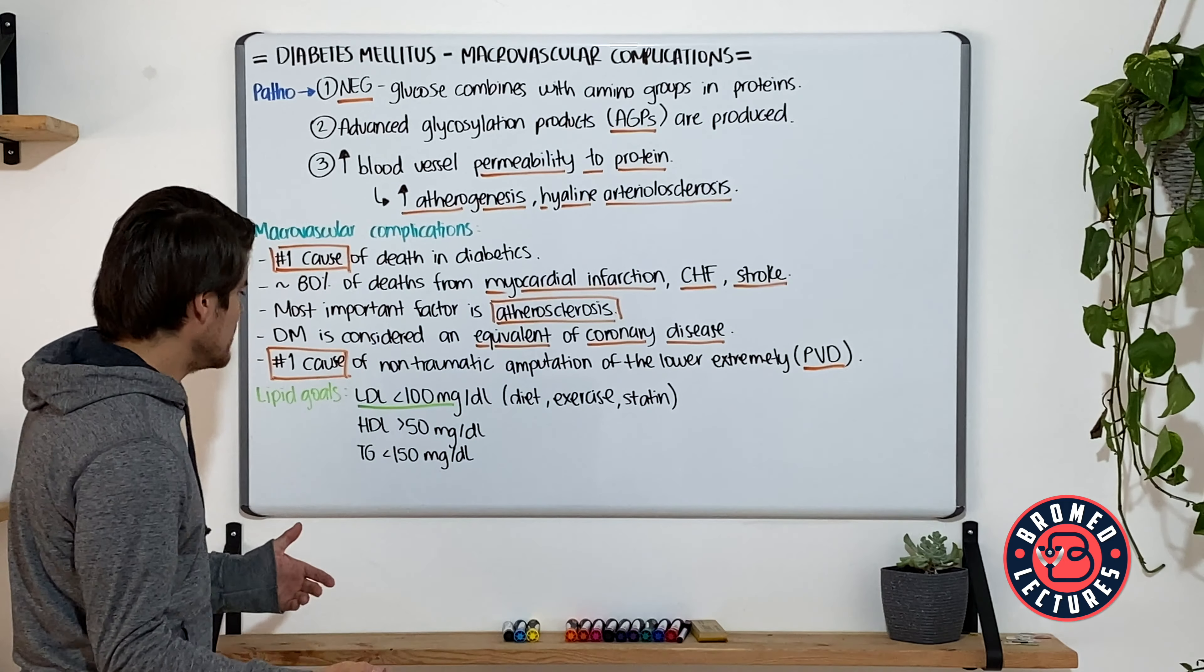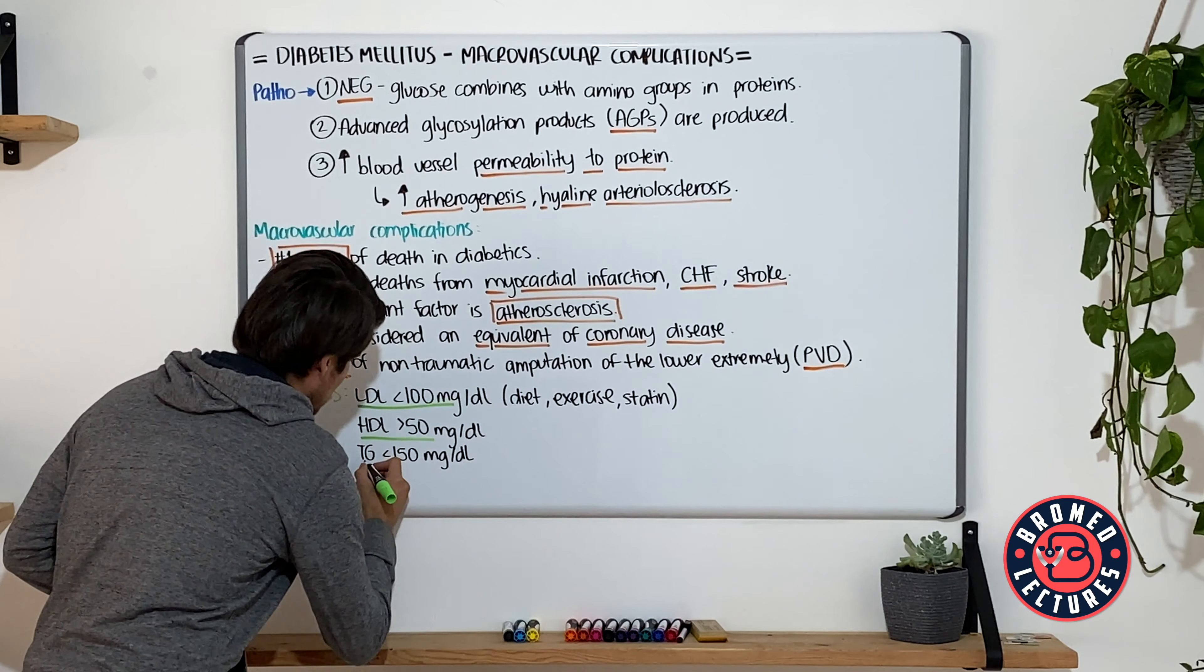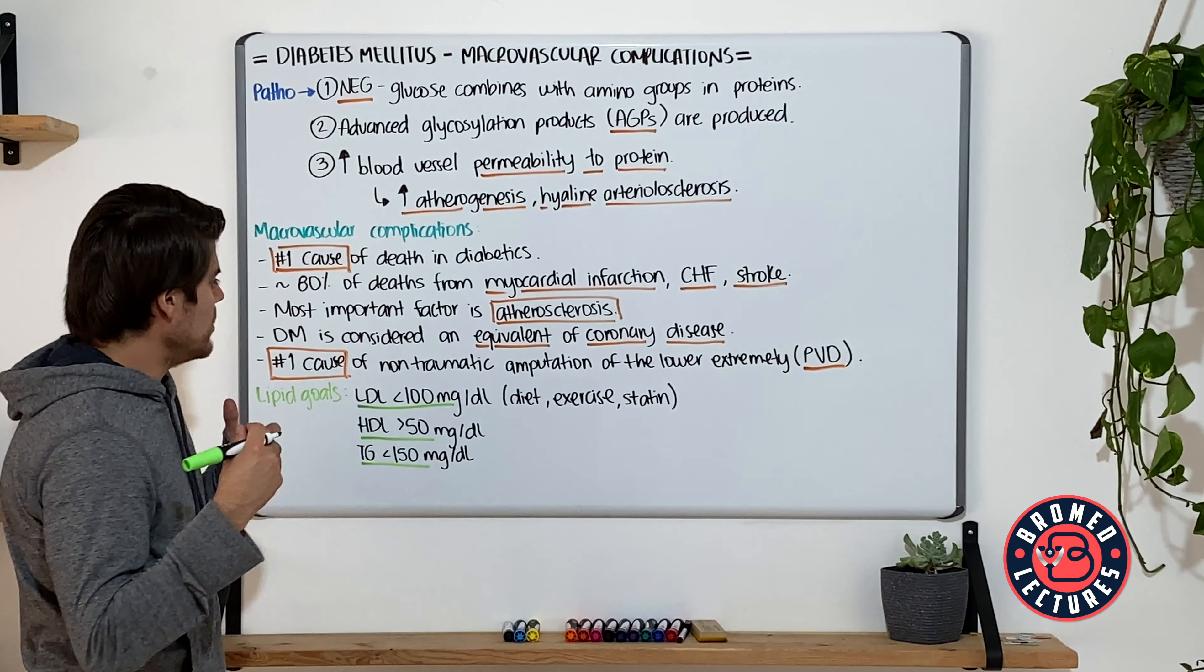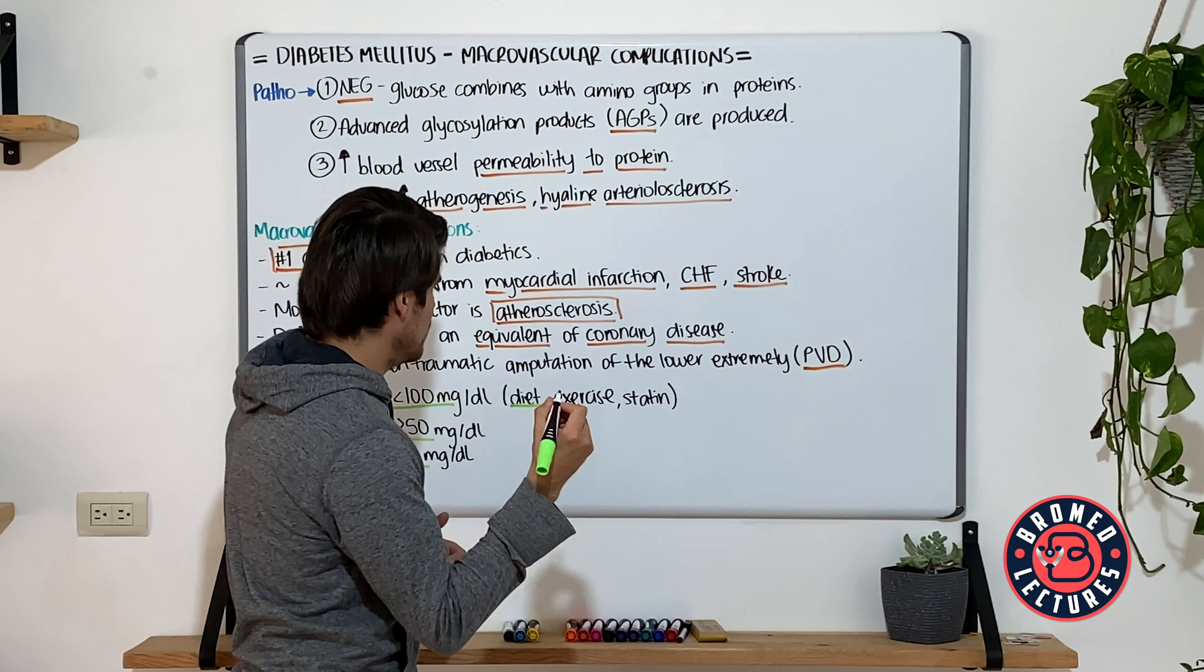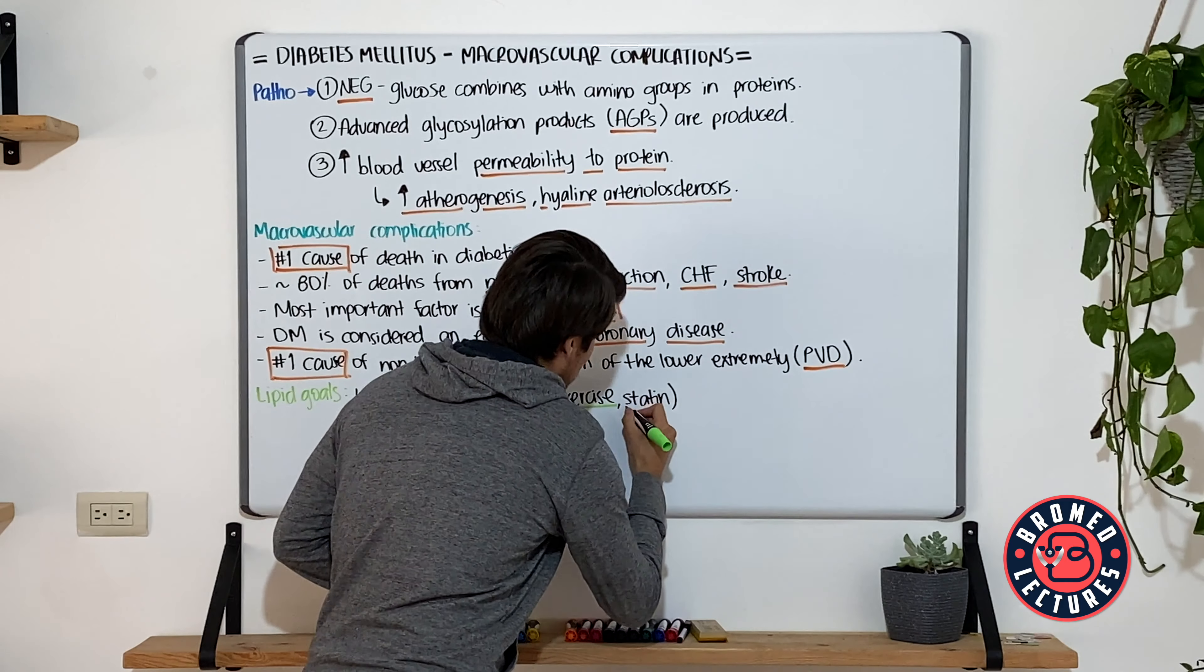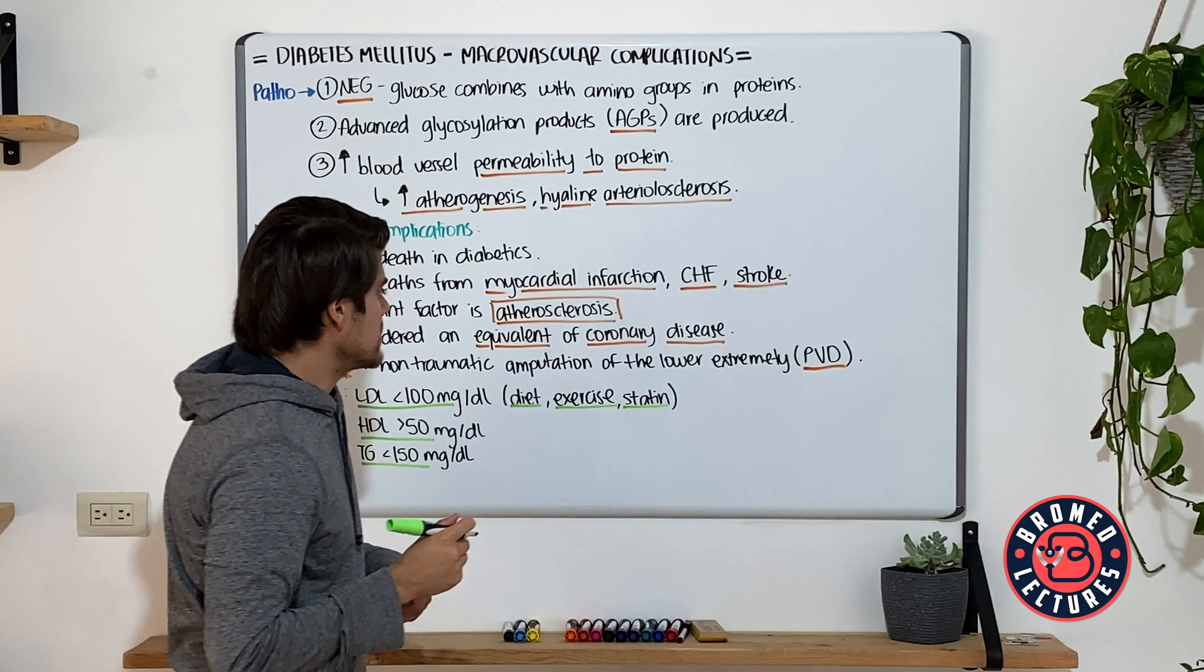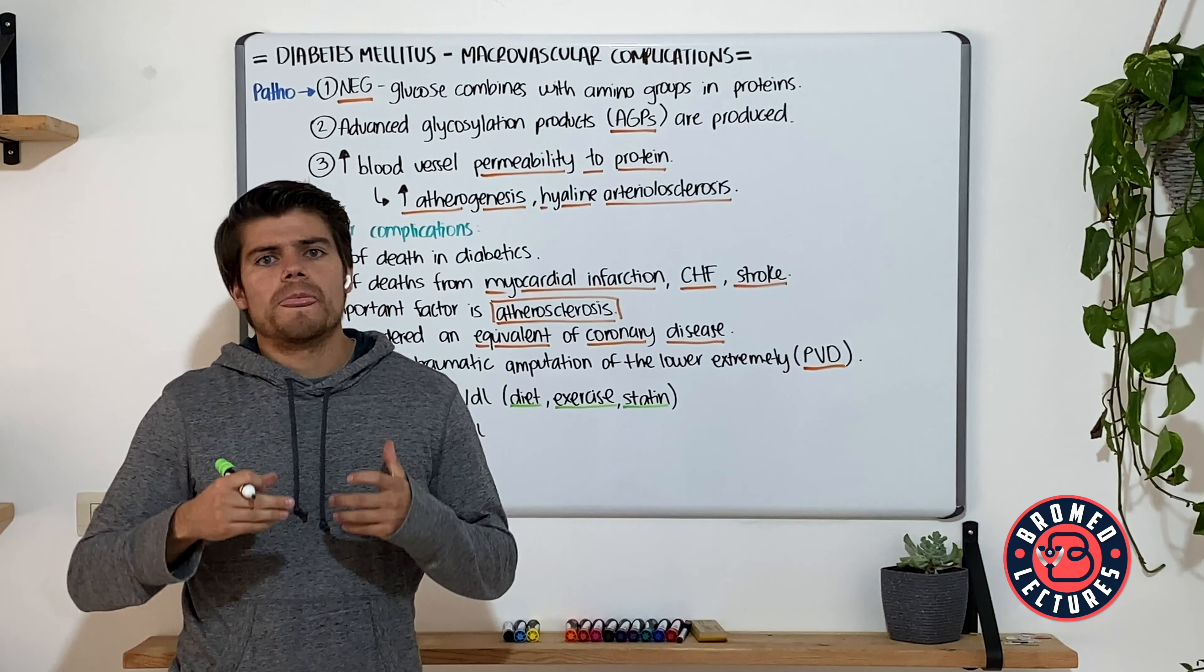But for the macrovascular complications, what we usually do is try to attain certain lipid goals. And these ones are going to be LDL levels less than 100, HDLs higher than 50, triglycerides less than 150. And we can achieve this through diet, of course, exercise implementation, and the addition of statins.